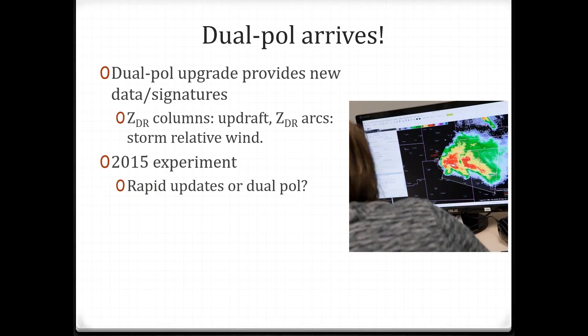Our story begins with the upgrade of the Weather Service radars to DualPol back in the early 2010s. DualPol can provide new information about storm-scale processes. We have new signatures that we can look at now, like ZDR columns, which provide some information about a storm's updraft and intensity.